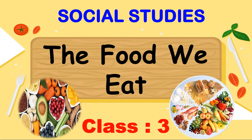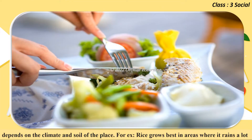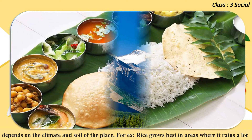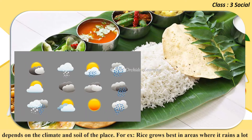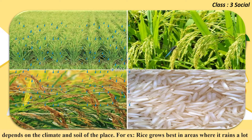The food we eat — Class 3 Social Studies. The food that people in a region eat most often becomes their staple food. India is a vast country with varied landforms and climate. The food eaten in different regions of the country depends on the climate and soil of the place. For example, rice grows best in areas where it rains a lot.